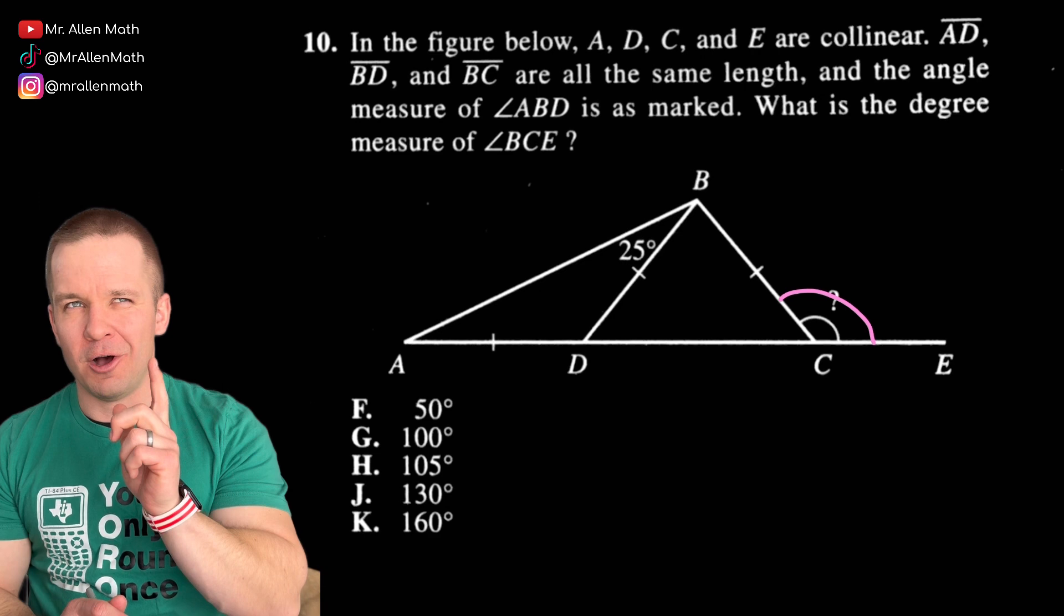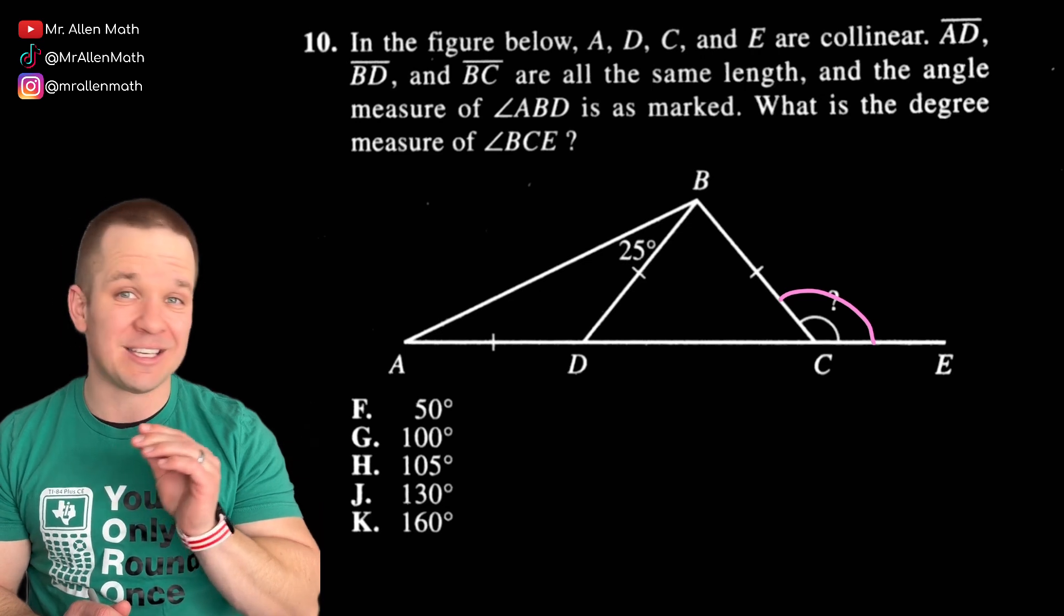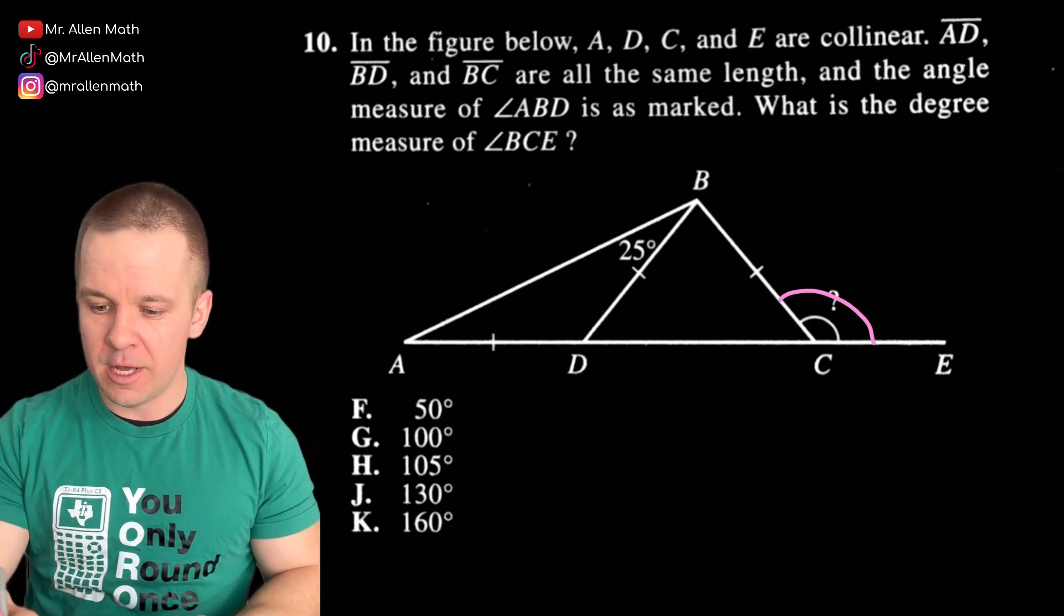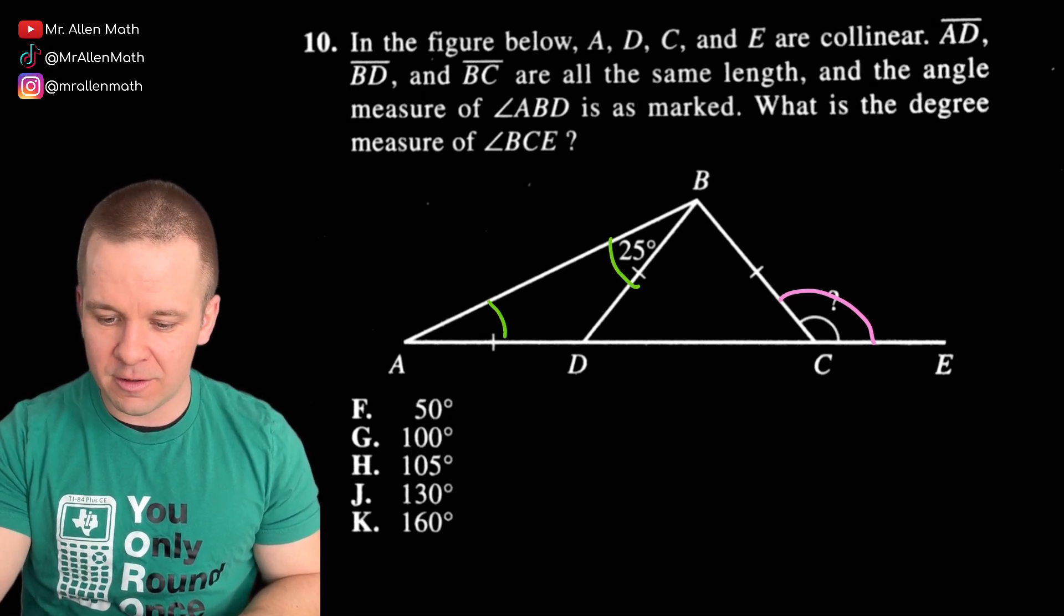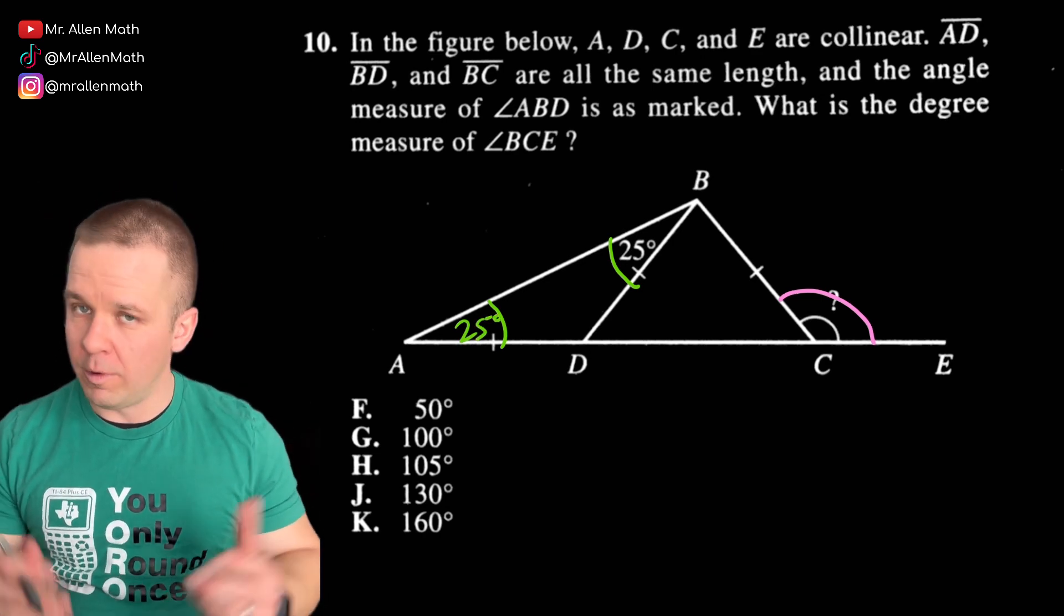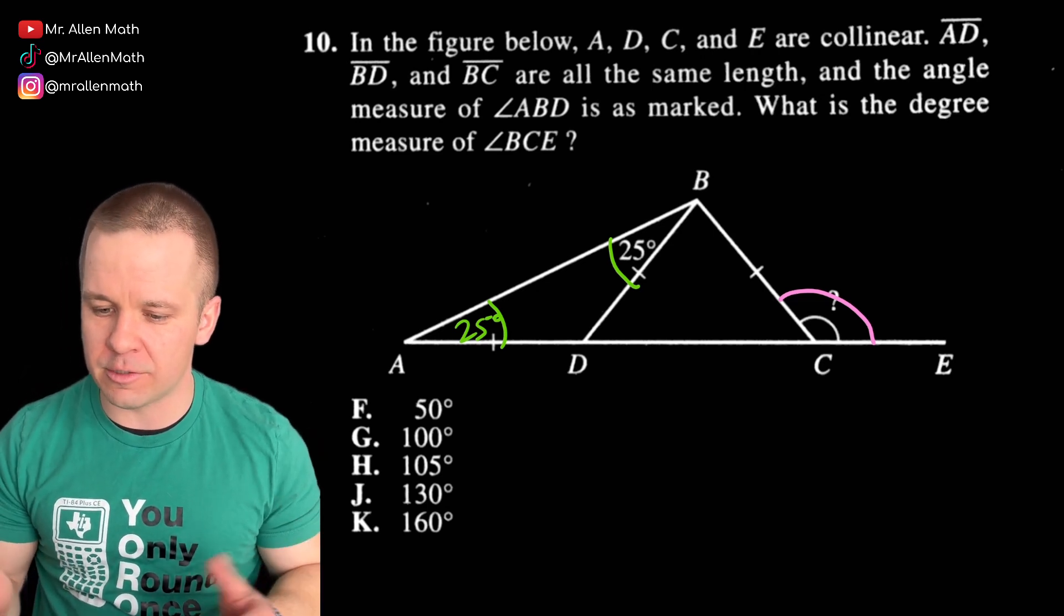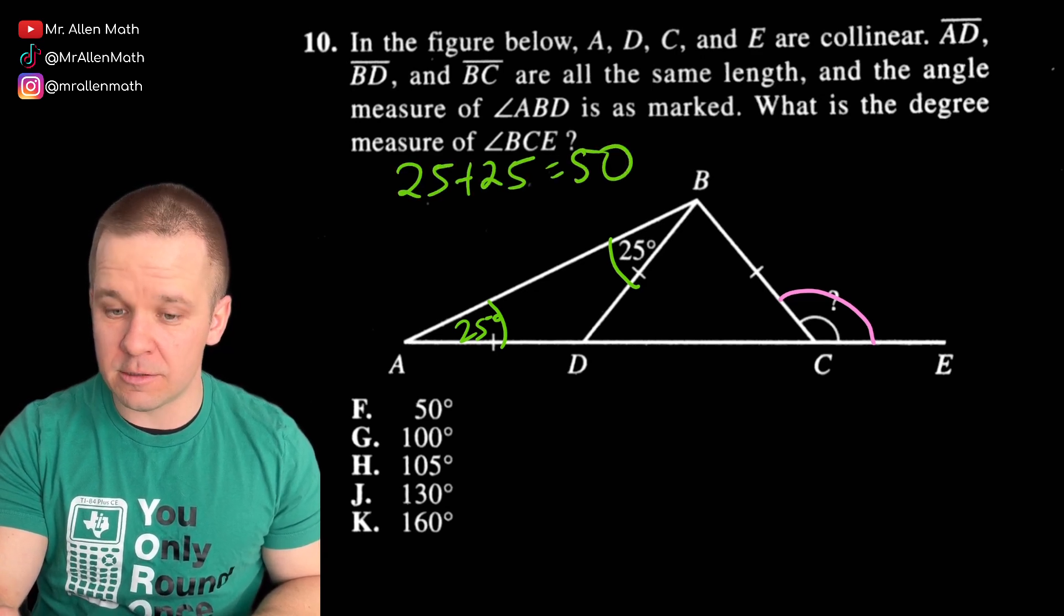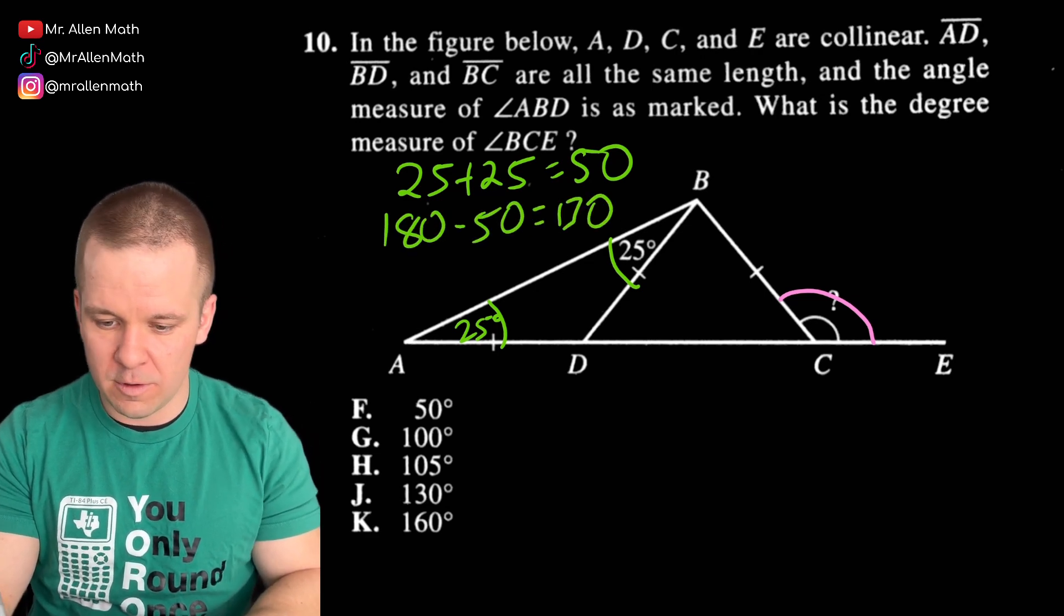All right, let's move on to the next one. In the figure below, A, D, C and E are collinear. As we know, that means they lie on the same line. AD, BD and BC are all the same length, and those are actually marked on there with the congruent mark. And the angle measure of angle ABD is marked, which is 25 degrees. What is the degree measure of angle BCE? So they have it marked over here with the question mark. I'll put it in pink right there so it really pops.